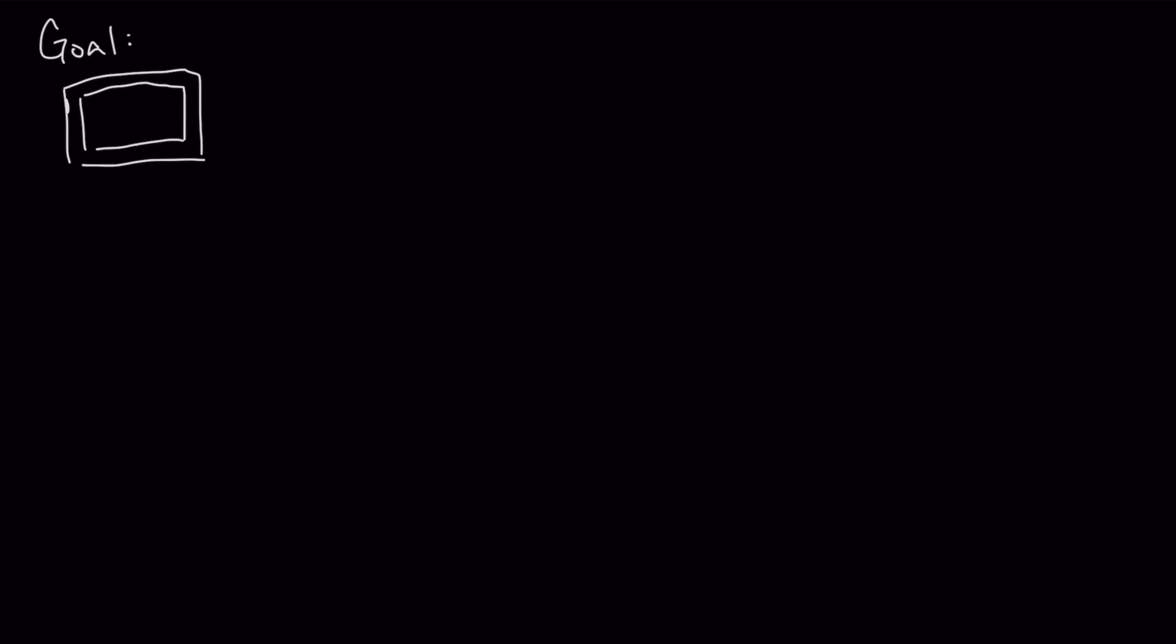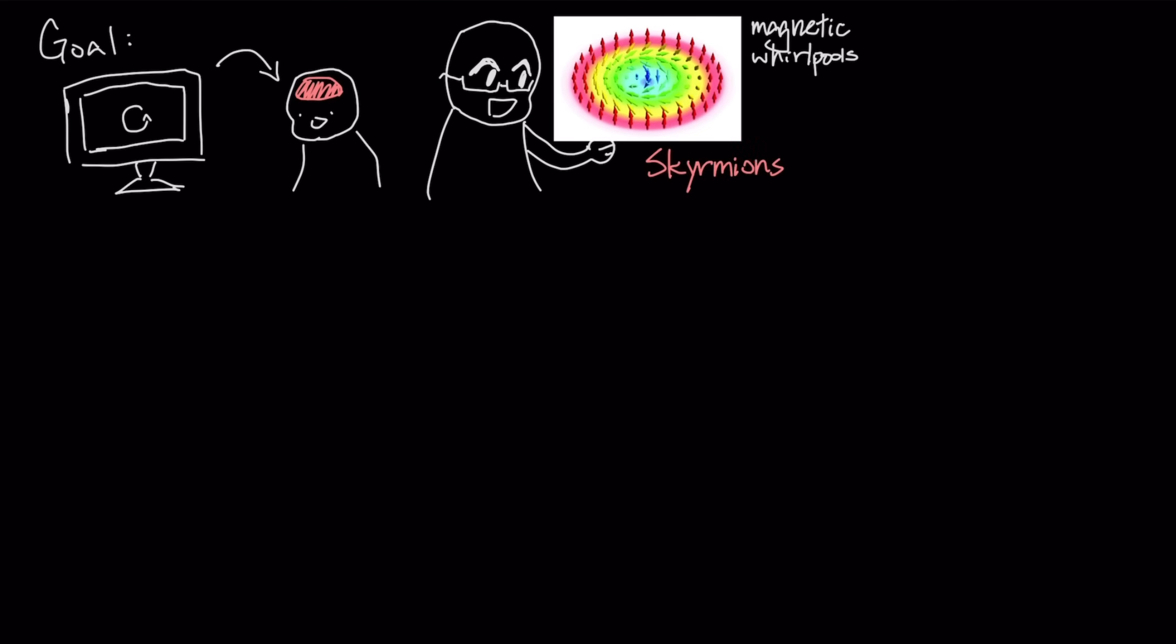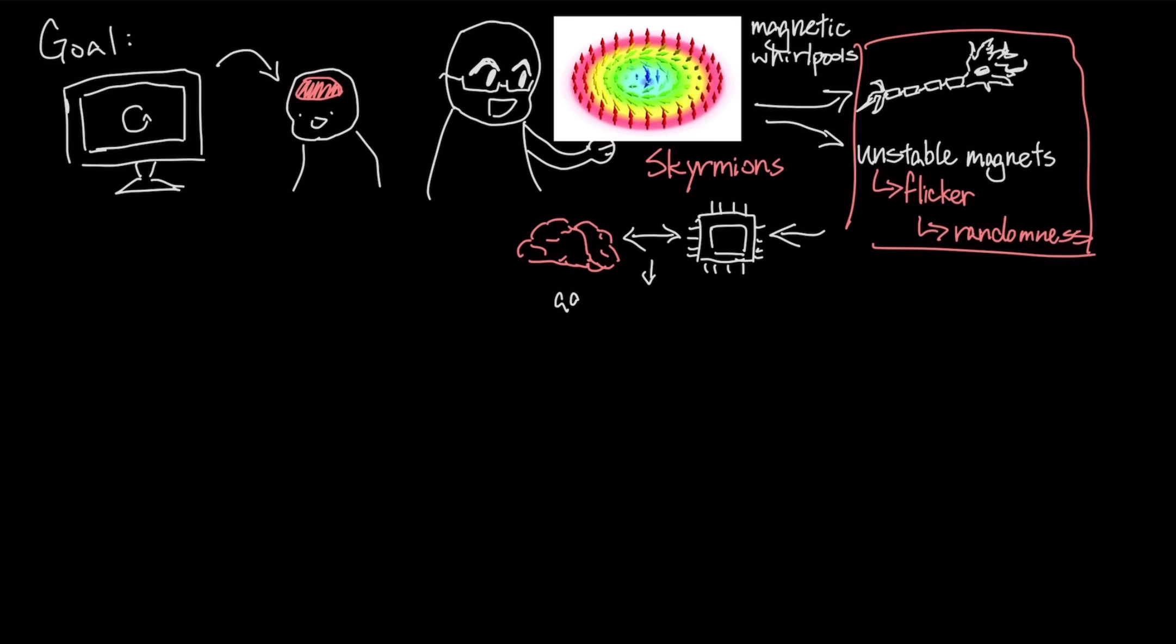This technology has a broader goal, to build computer hardware that physically resembles and operates like a human brain. By using tiny magnetic whirlpools called skirmians to act like neurons, and unstable magnets that intentionally flicker to create randomness, we can build chips that adapt and approximate just like a biological mind does.